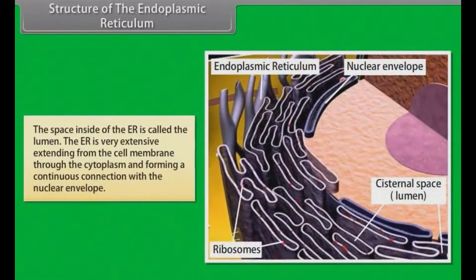The space inside of the ER is called the lumen. The ER is very extensive, extending from the cell membrane through the cytoplasm and forming a continuous connection with the nuclear envelope.